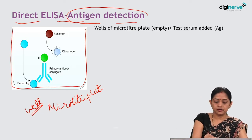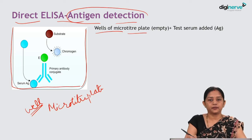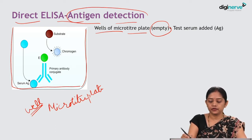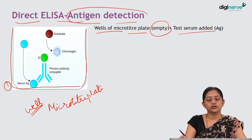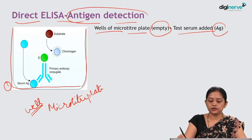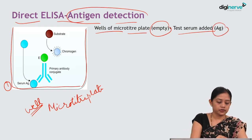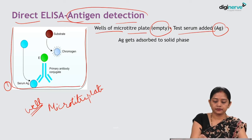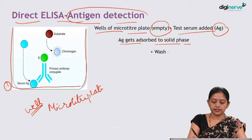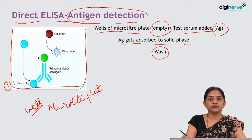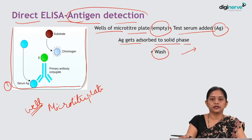In direct ELISA the microtiter plate well starts empty — nothing has been adsorbed onto the solid phase. The first step is addition of patient serum. If the patient serum contains antigen, that antigen goes and gets adsorbed onto the solid phase of the microtiter well. In the next wash step, excess antigen that was not adsorbed gets washed away.